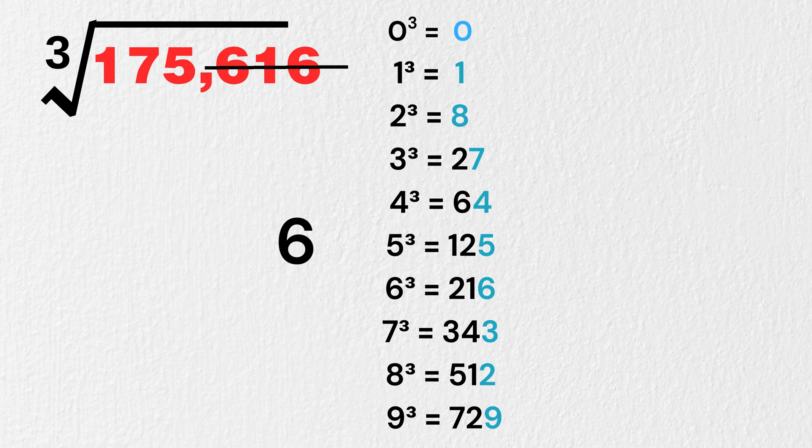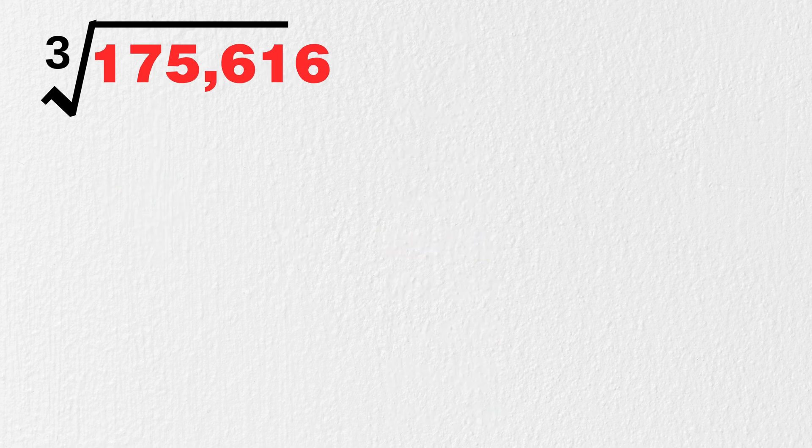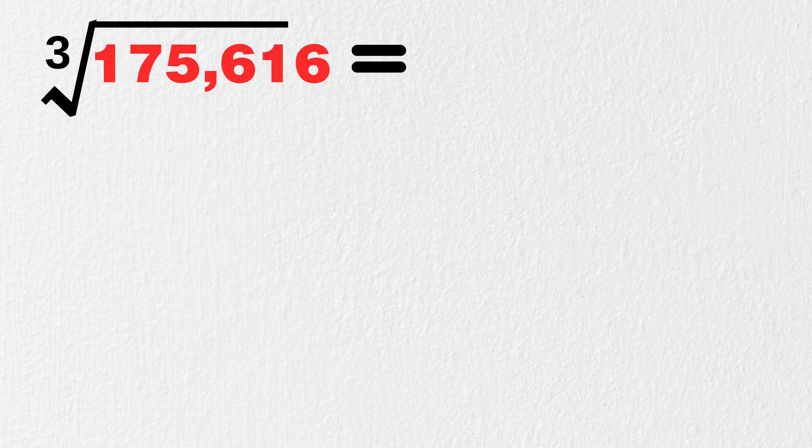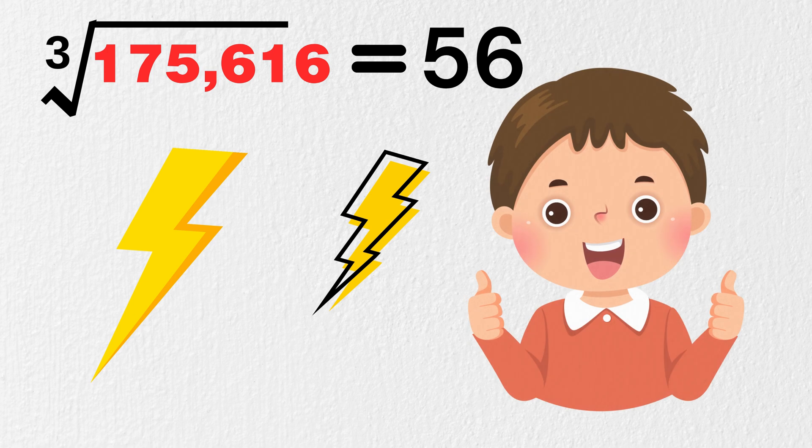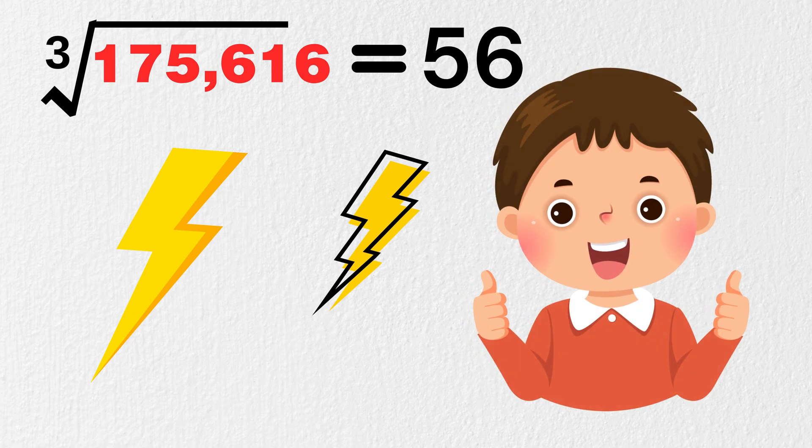Finally, we want a cube which is just less than or equal to 175. That is, number 125, which is 5 cubed. So, we write 5 here. Our answer is cube root of 175,616 is 56. We got it at lightning speed. That's great.